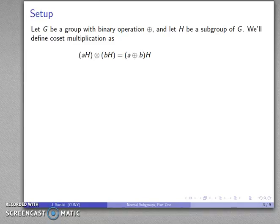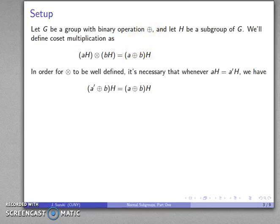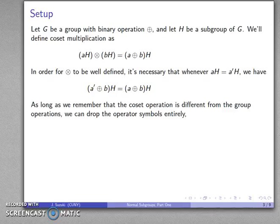We'll define our coset multiplication: if I take two cosets and try to multiply them, what I'm going to do is I'm going to take the group elements that produce the cosets and apply the group operation to them. And in order for coset multiplication to be well-defined, it's necessary that whenever I have two cosets equal, the results of the coset multiplication are going to be equal.